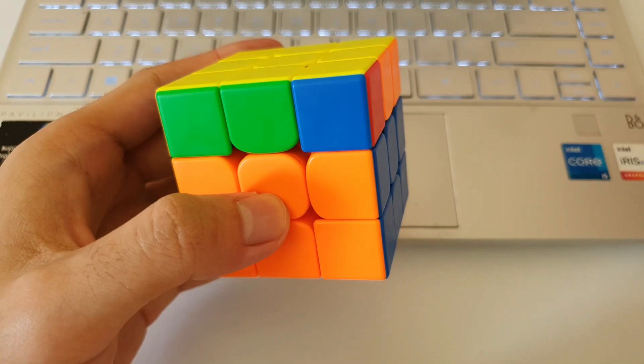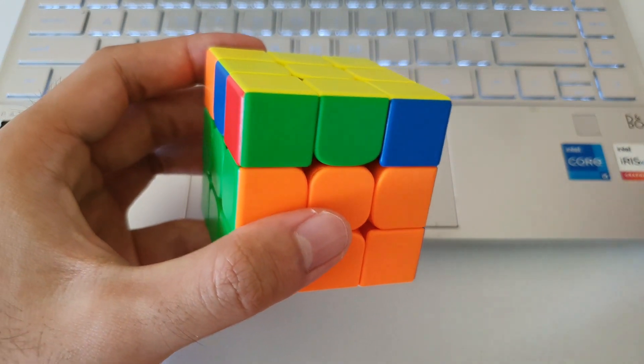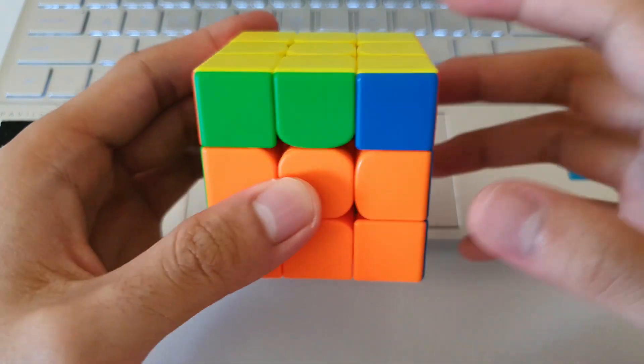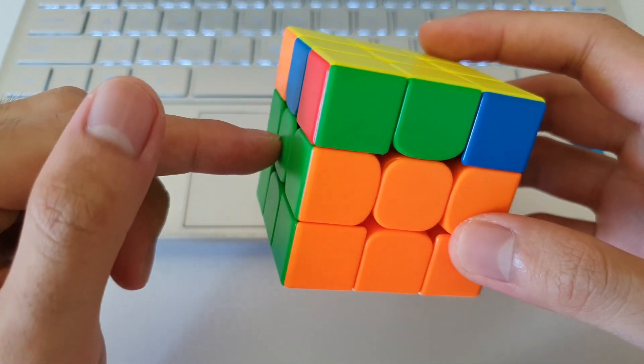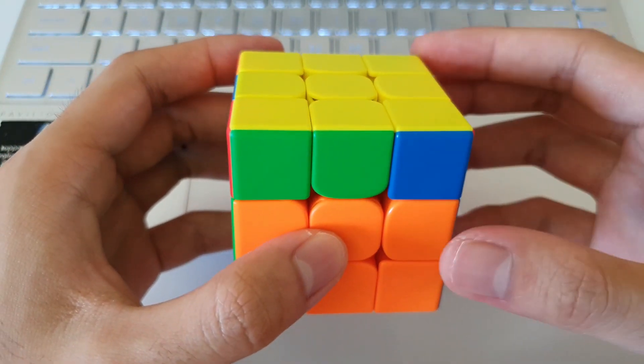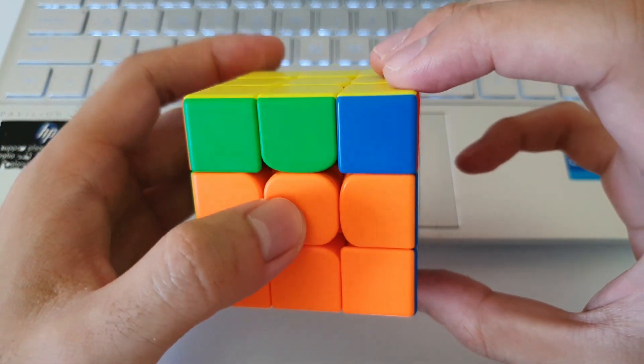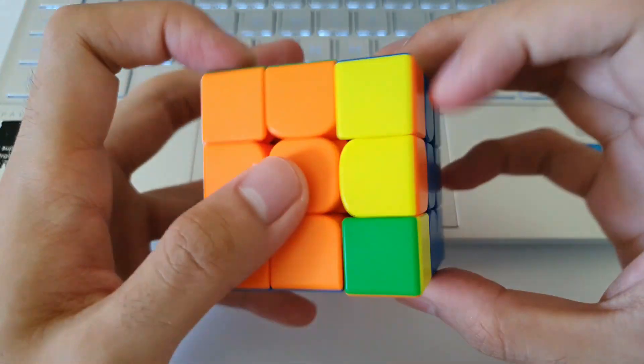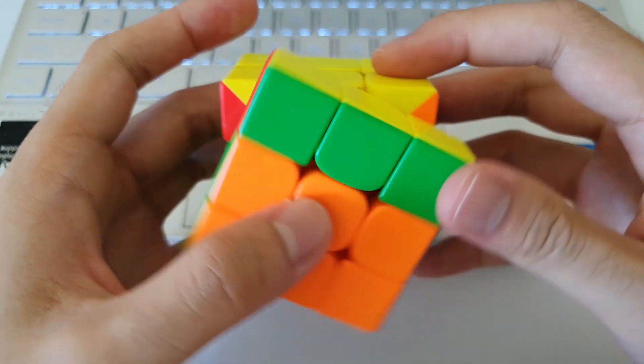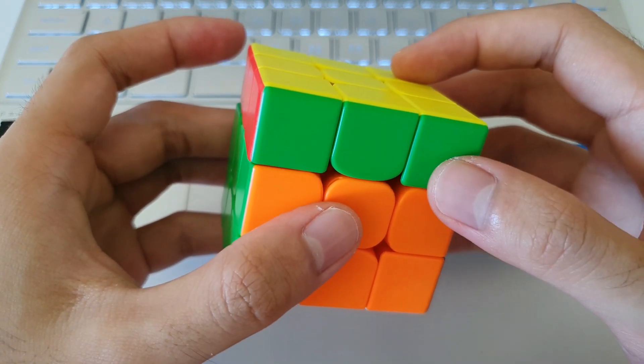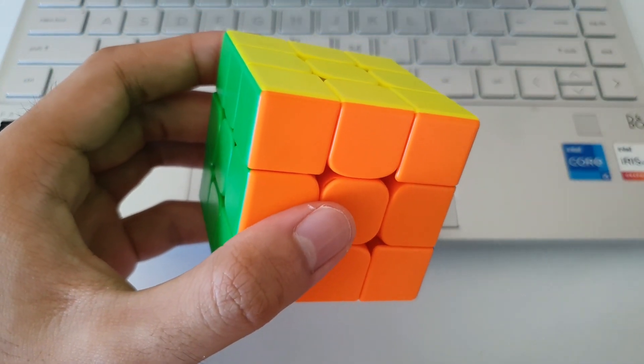So here's another example of the Y-perm. Once again, I'll recognise the AUF from these 2x1 bars here, you'll notice that it actually belongs on this side, which means that I'll have to do a U-move after PLL to actually solve the cube. I'll demonstrate that right now. So we'll do the algorithm. And you'll notice that green ends up at the front. So as predicted, we needed to do a U-move after the algorithm.